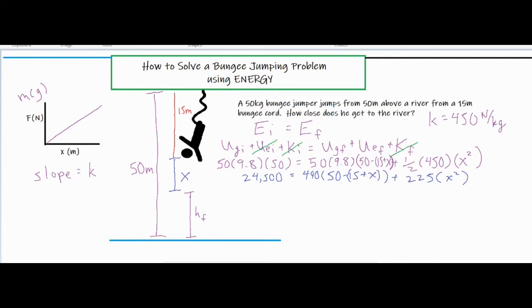After cleaning up the setup, I multiplied 50 × 9.8 × 50 to get 24,500 on the left side. On the right side I have 490 × (50 − 15 + x), representing the final gravitational PE, plus one-half times 450 equals 225 times x², for the elastic PE. Now I have a quadratic in x to solve. I'll distribute the 490 through to condense it before solving.